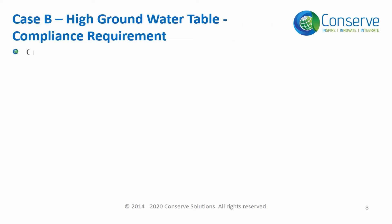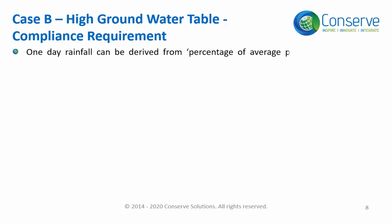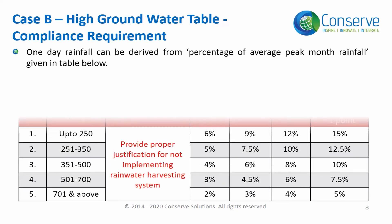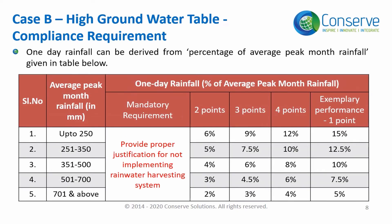For Case B, the mandatory requirement does not require a rainwater harvesting system. When the water table is high, the state or central government water board does not recommend artificial rainwater harvesting. The project has to give proper justification for not implementing a rainwater harvesting system.